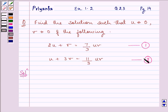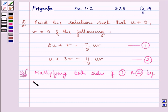Now, as we can see that we are having variables on the right-hand side also. So first of all, we will be multiplying both the sides of the first equation as well as second equation by uv so as to simplify our equation.